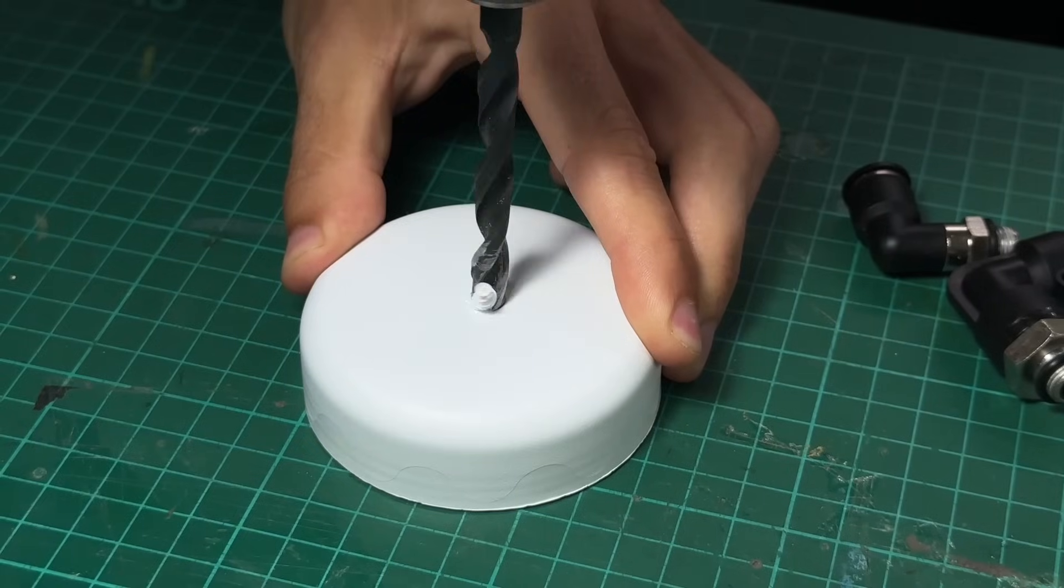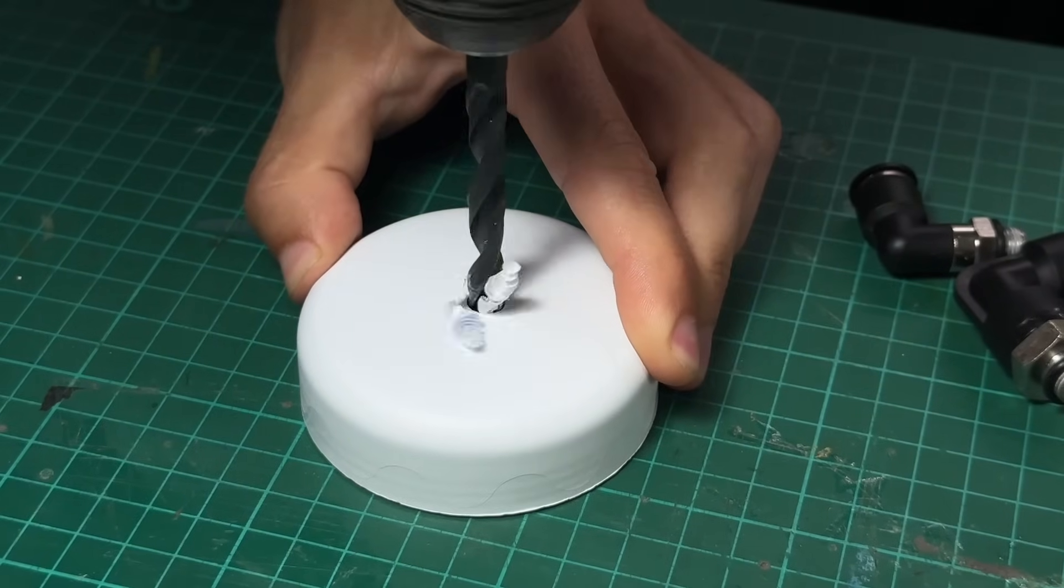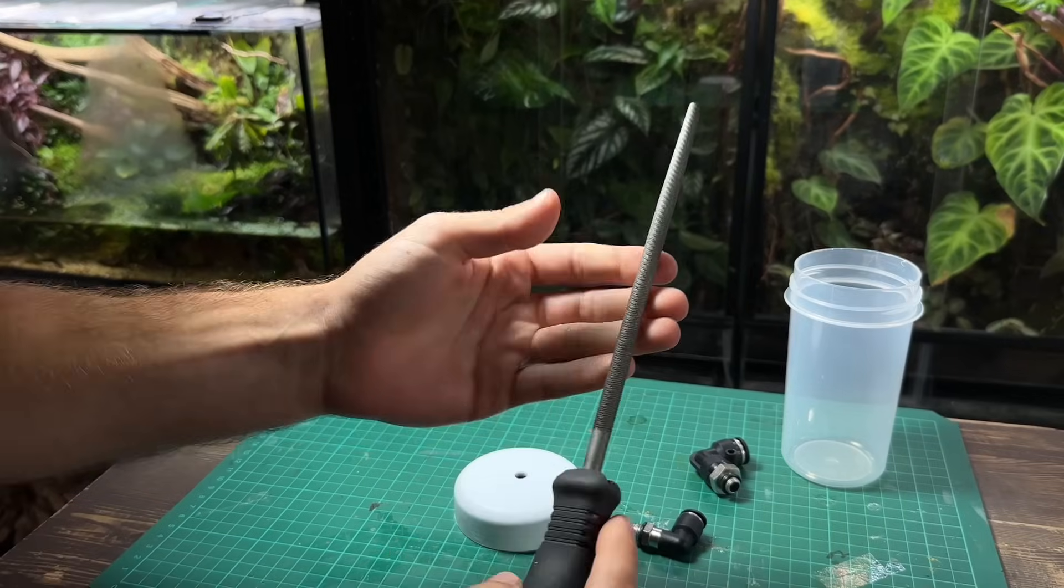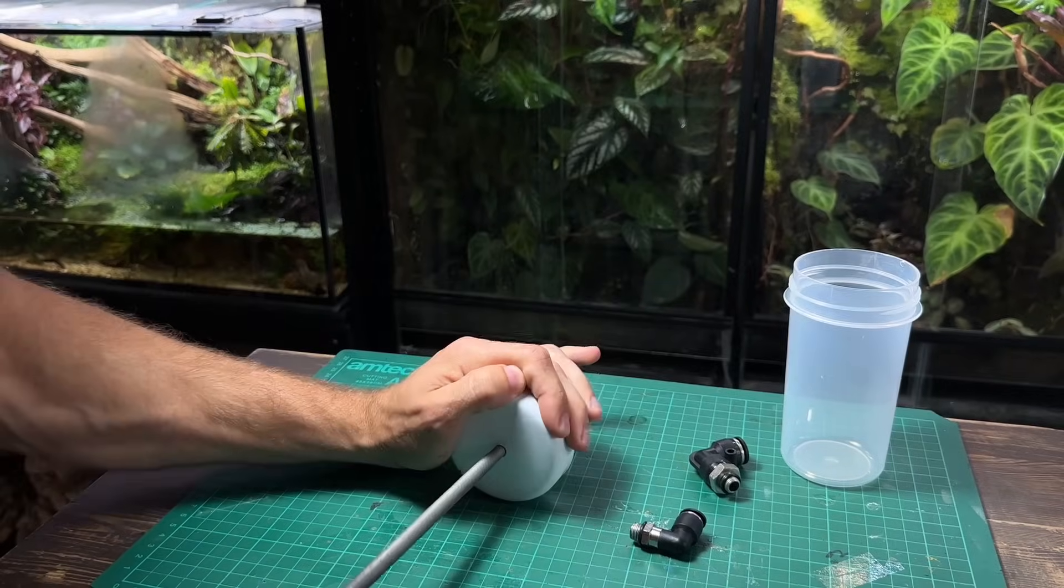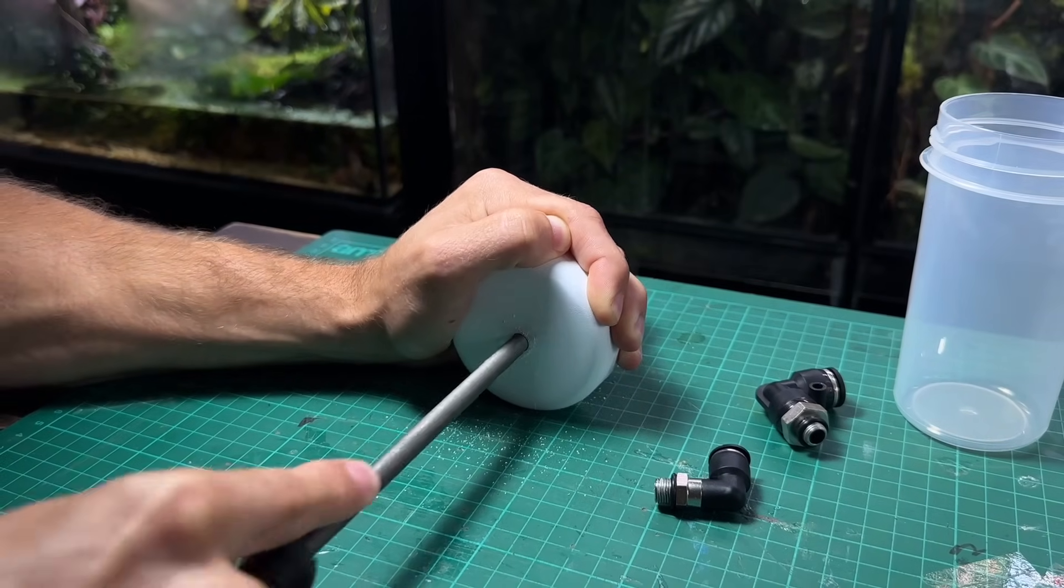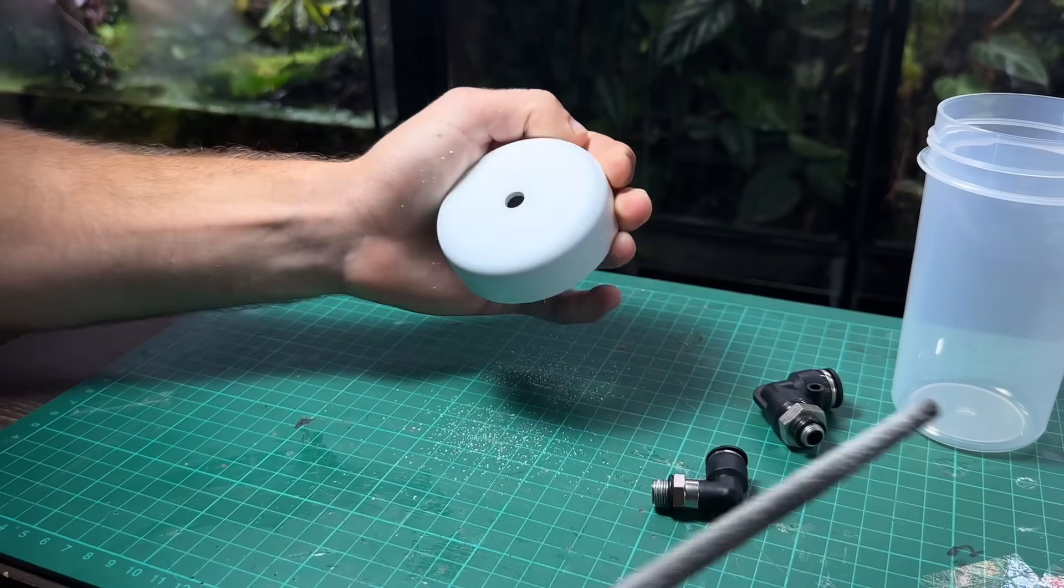I'll roughly drill the hole in the middle but it doesn't have to be too precise. This is the biggest drill bit I've got but it's not quite big enough to start threading the push fitting inside so I'm going to have to start opening it up a bit. This is simple enough with a file. It would certainly be easier to have the right size drill bit but sometimes you've got to work with what you've got.